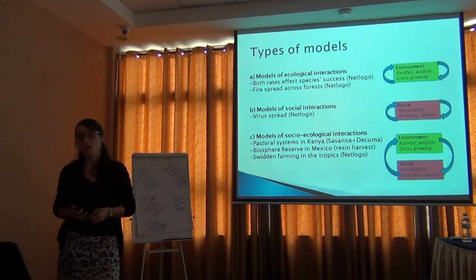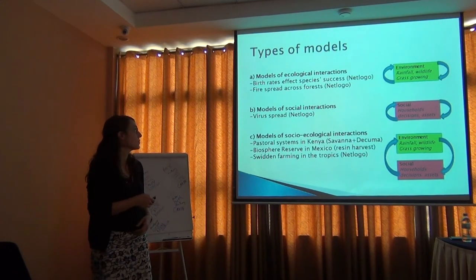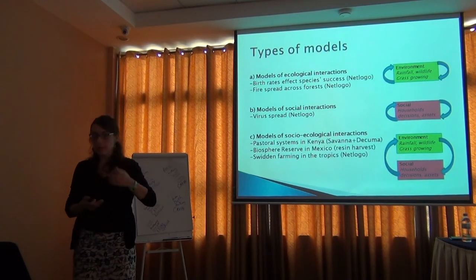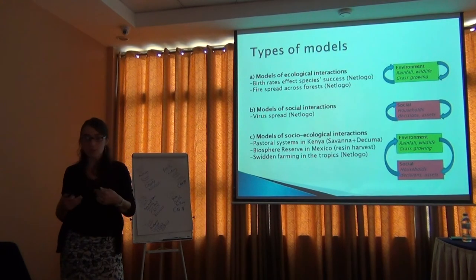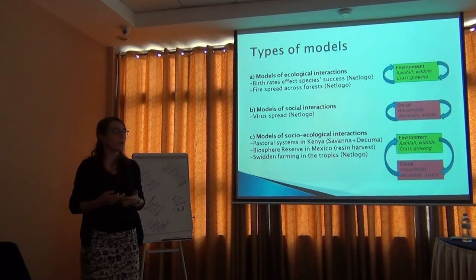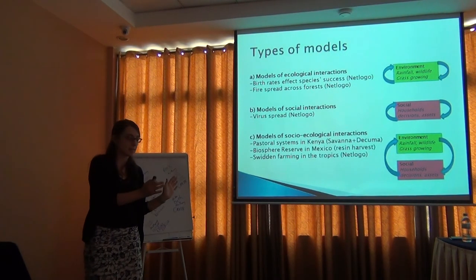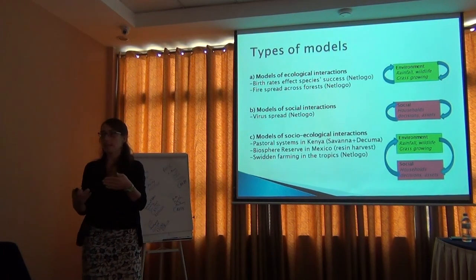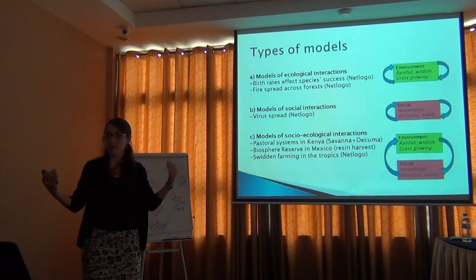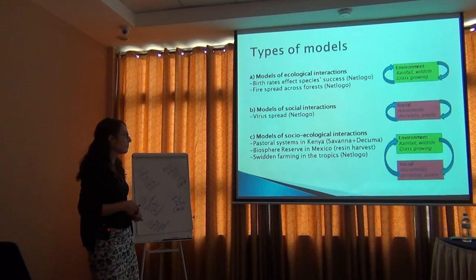When thinking about types of models, there are three categories. First, models of ecological interactions — a species and the environment, or grass growing depending on rainfall. Second, models of social interaction — within animals or within humans, like virus spread. Third, and most interesting for us, is combining both: seeing what happens at the environmental level and also how people react to those changes, helping us understand why land use is changing at a landscape level.